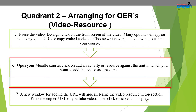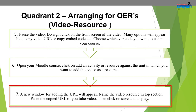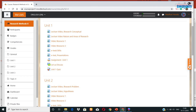Open your Moodle course. Click on 'Add an activity or resource' against the unit in which you want to add the video. A new window for adding the URL will appear. Name the video resource in the top section. Paste the copied URL of your YouTube video in the second section and click on 'Save and display.' In the same manner, online books or any other open educational resources can be added to the course, and all text, videos, or other resources will be displayed on the front page of the course.